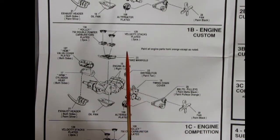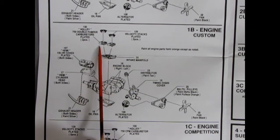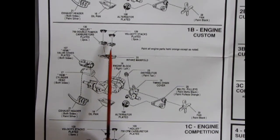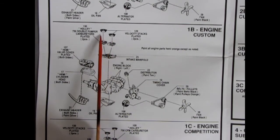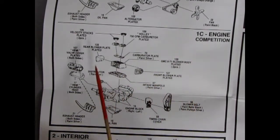Our second panel here shows the custom engine. The basic bottom components go together the same as in the stock version, except here we have a special intake manifold with two carburetors - two 750 double pumper carburetors from Holley, as well as two velocity stacks.